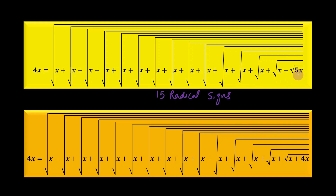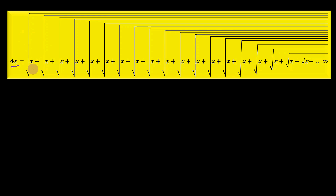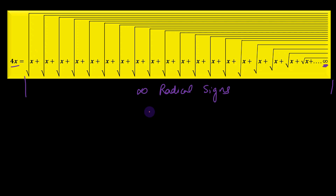Again, what we have done is replace this 5x by x plus 4x, and again we are going to replace the original value of 4x in this expression. We are going to repeat that process an infinite number of times, thereby getting 4x equals the square root of x plus so on, with this process repeated infinitely. If you observe, among this there lie infinite radical signs, and as we know, infinity and infinity minus 1 are virtually the same.